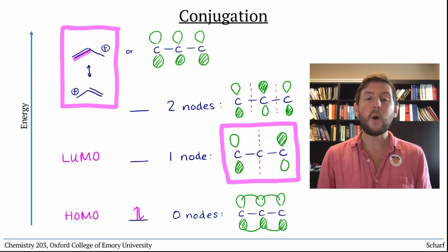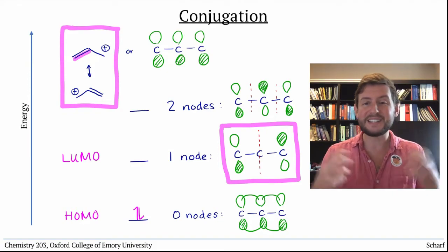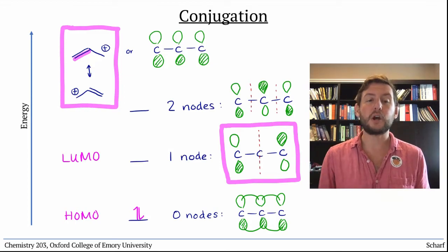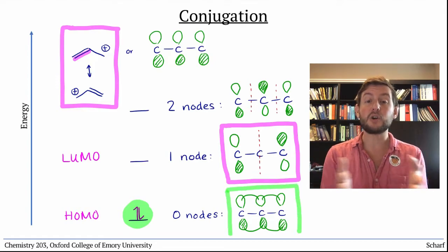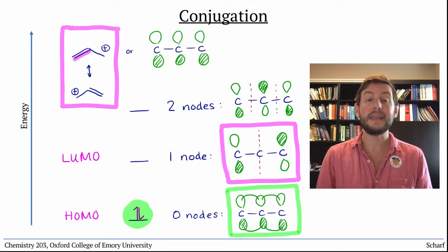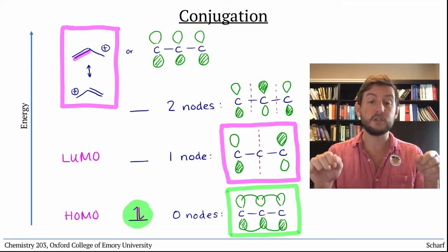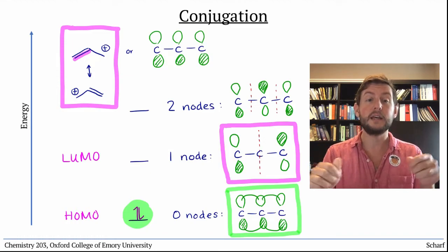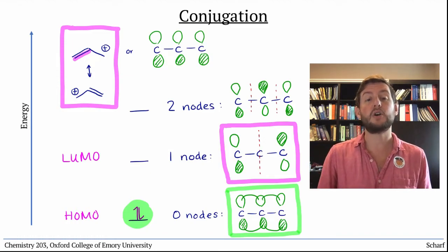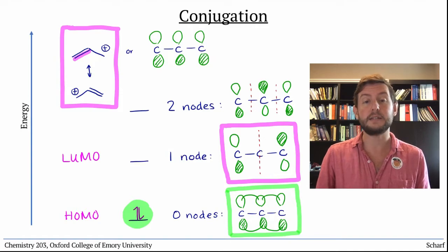So what's going on here? Why is this more stable than a plain old carbocation? The electrons in this pi-system are spread out evenly across all three atoms. They love that. And the positive charge is spread out evenly between the two terminal carbon atoms. That delocalization of charge also helps stabilize this ion.